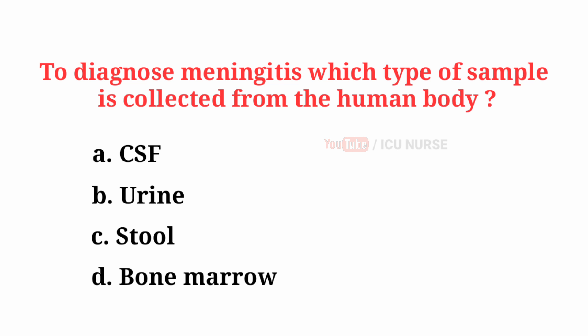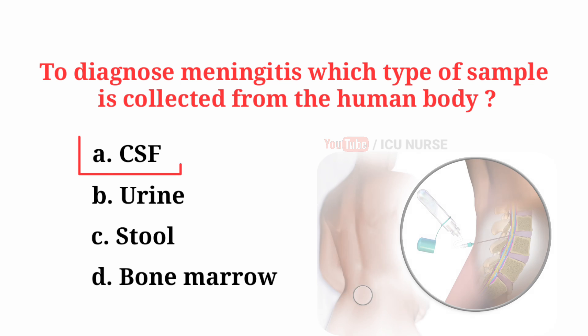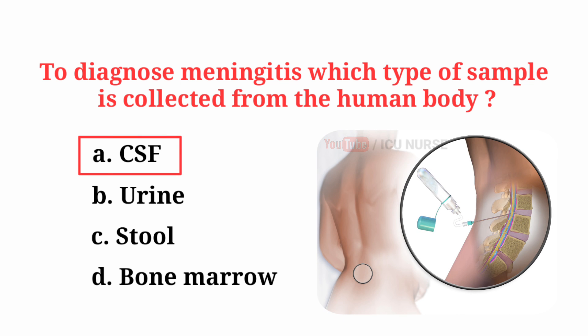To diagnose meningitis, which type of sample is collected from the human body? The correct answer is A, CSF — that is, cerebrospinal fluid.